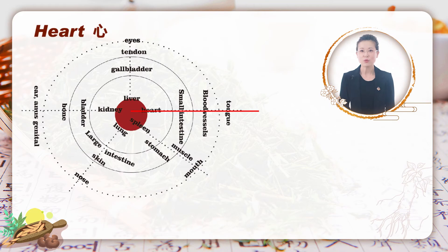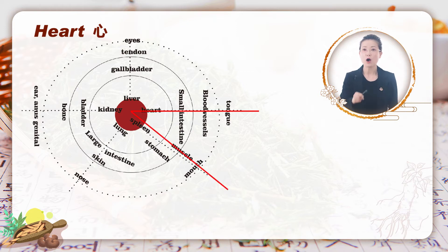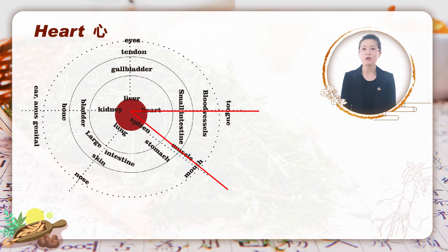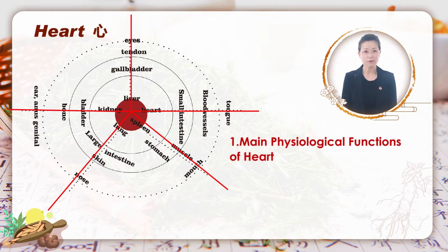The heart, the small intestine, blood vessels, and the tongue consist of the heart system in TCM. The rest of them work in the same way. So in the following class, we will follow the same structure to learn every zhang organ.